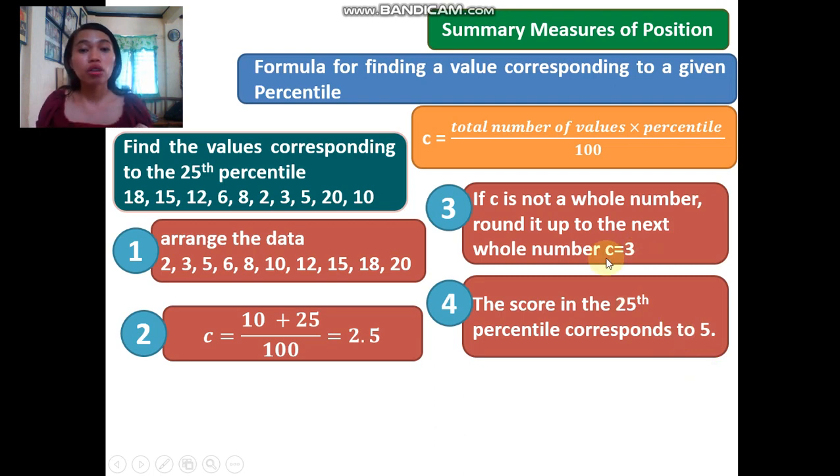Since C equals 3, we count to the third position in our arranged data. The third value is 5. So 5 corresponds to the 25th percentile.